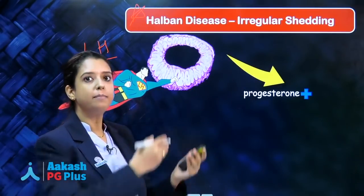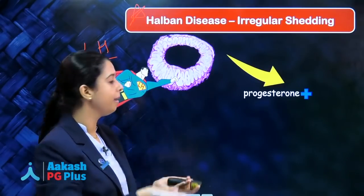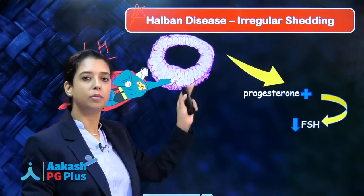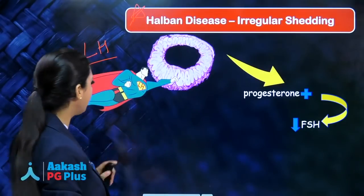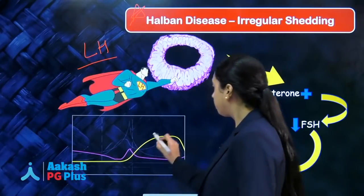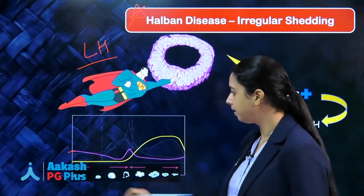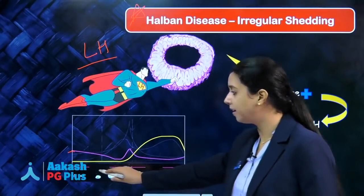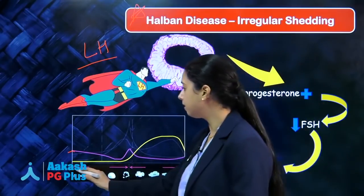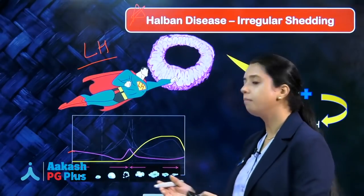Then, when progesterone and estrogen fall at the end of the cycle, FSH starts rising and starts the new cycle. But here, progesterone is persistent, so FSH levels will not rise — they will keep on decreasing. Remember this cycle: when progesterone was falling, FSH was rising, so the follicle cohort was starting to mature. Now, since FSH has not risen enough, the follicles that mature will not be many in number and not good in quality. So follicular maturation is affected.